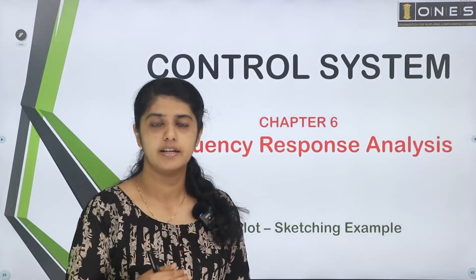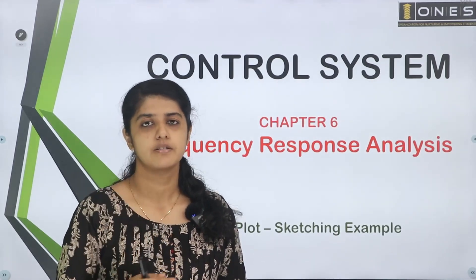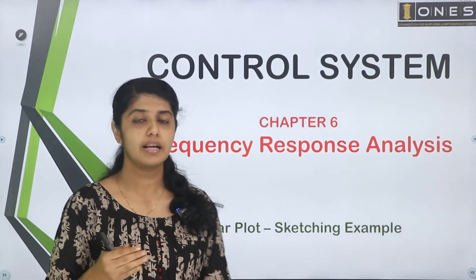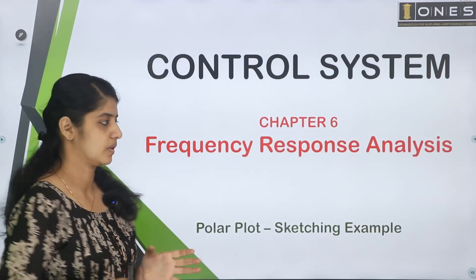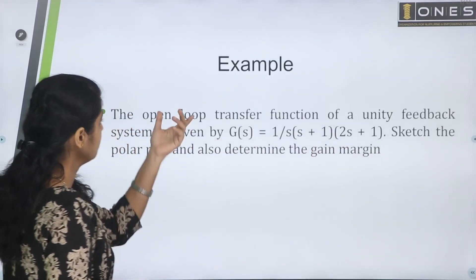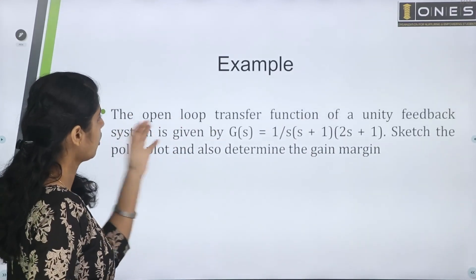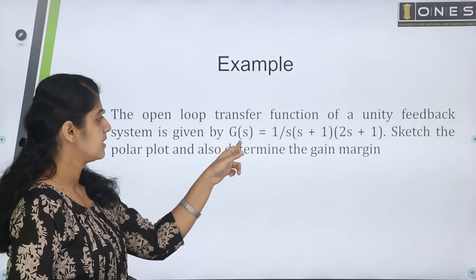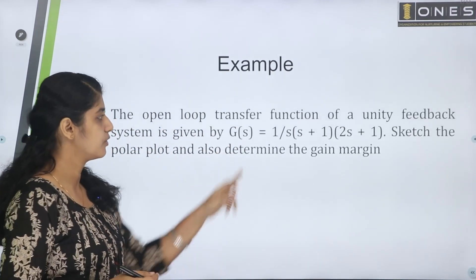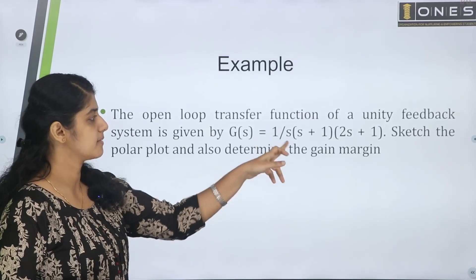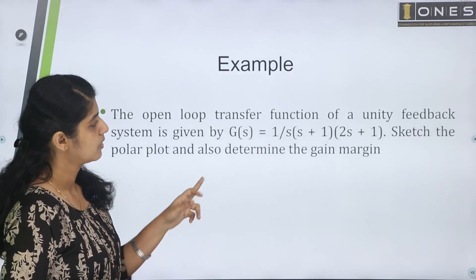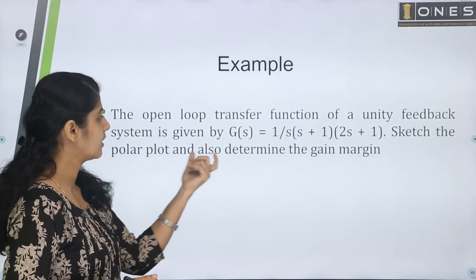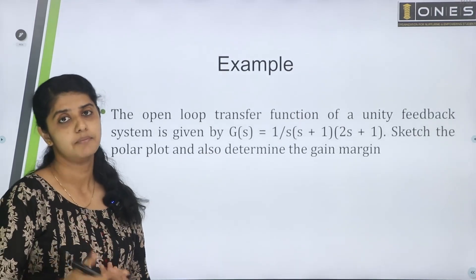If you ask a question about the transfer function, the transfer function will be applied to the Polar Plot. The question is: the Open Loop Transfer Function of a Unity Feedback System is given by G(s) = 1 divided by s(s+1)(2s+1). Sketch the Polar Plot and also determine the Gain Margin.